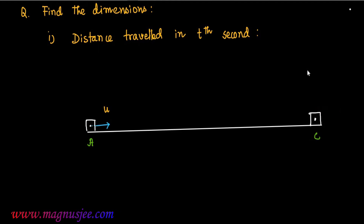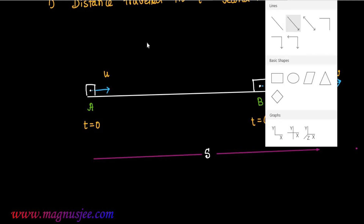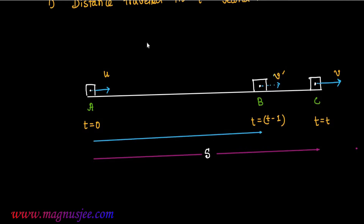The initial velocity of the body is u and the final velocity at point C becomes v after time t. At point A, time t equals 0, and at point C, time equals t seconds. We consider the preceding point B, where time is t minus 1 second and the velocity of the body is v prime. The distance from A to C is s, and the distance from A to B is s prime.